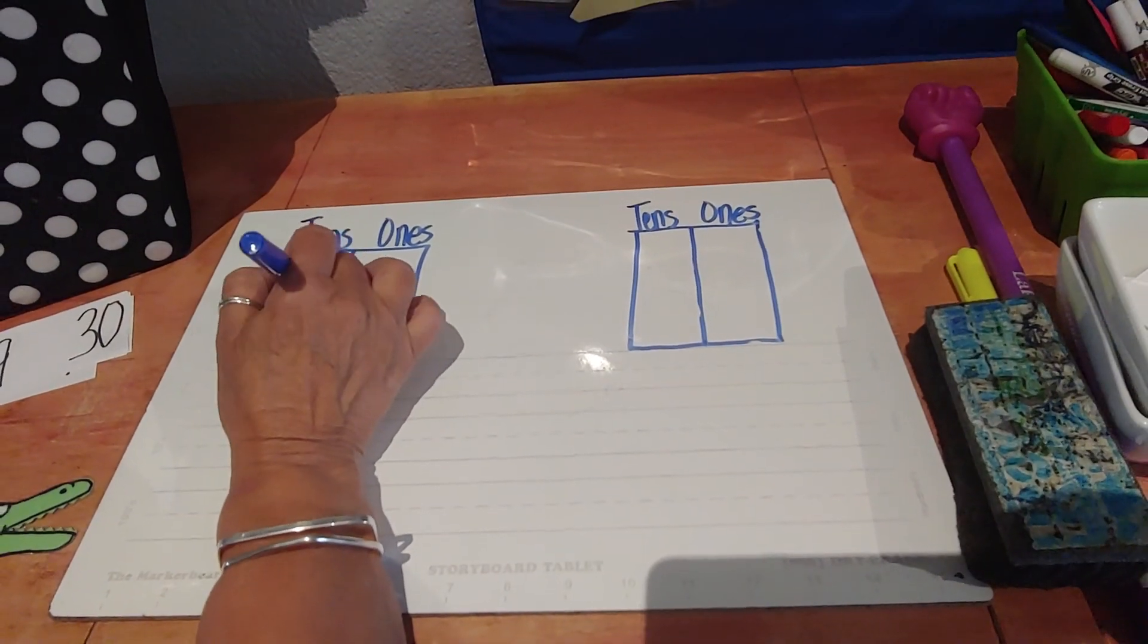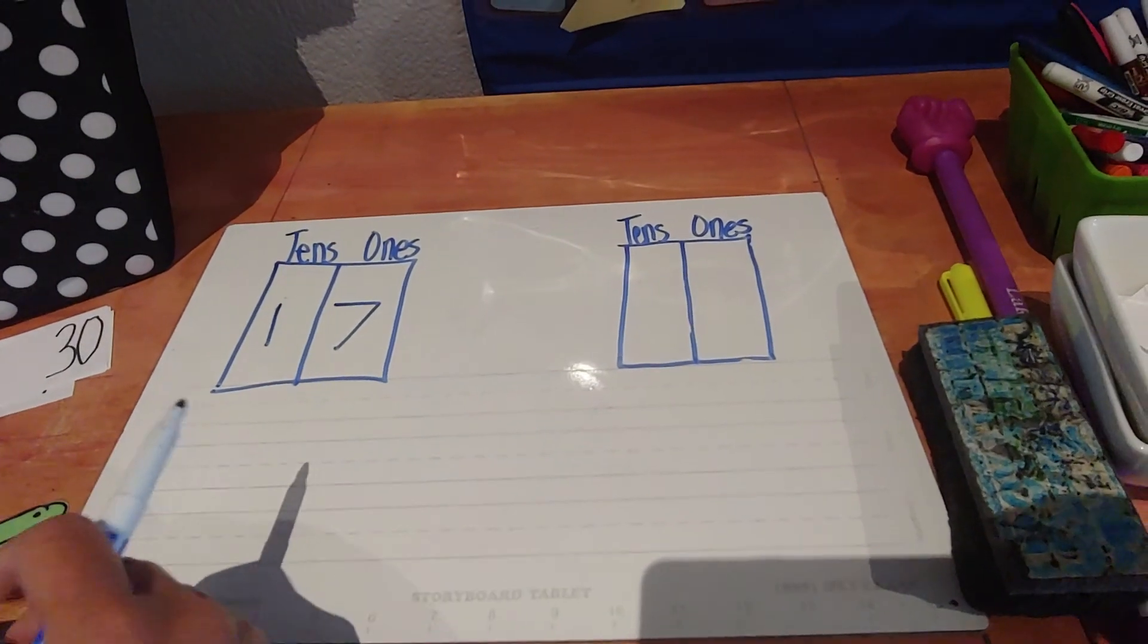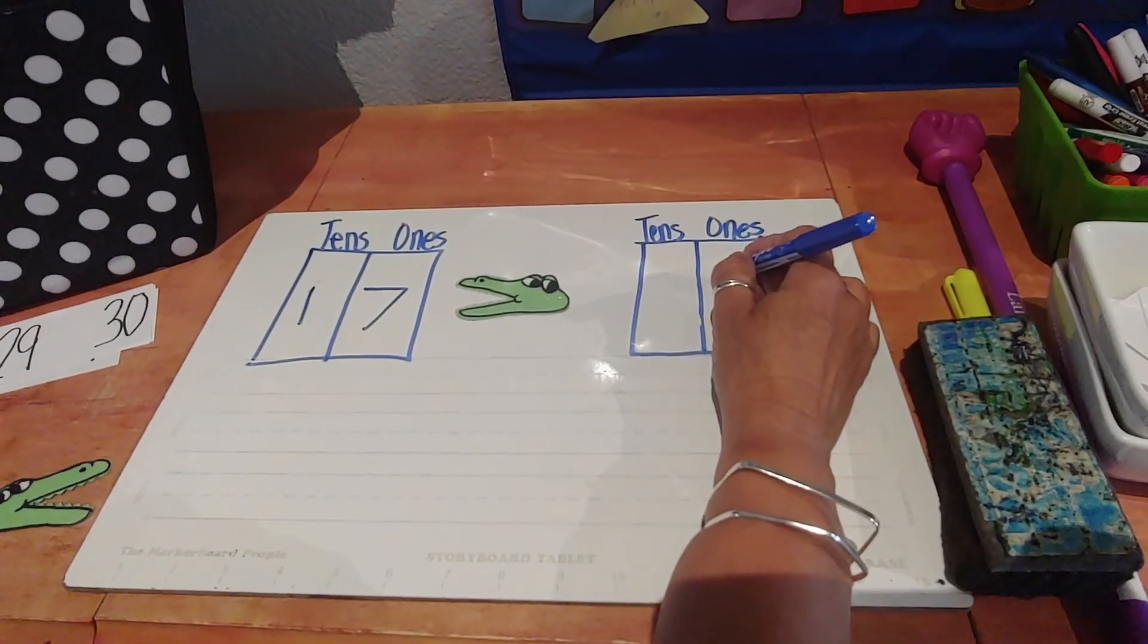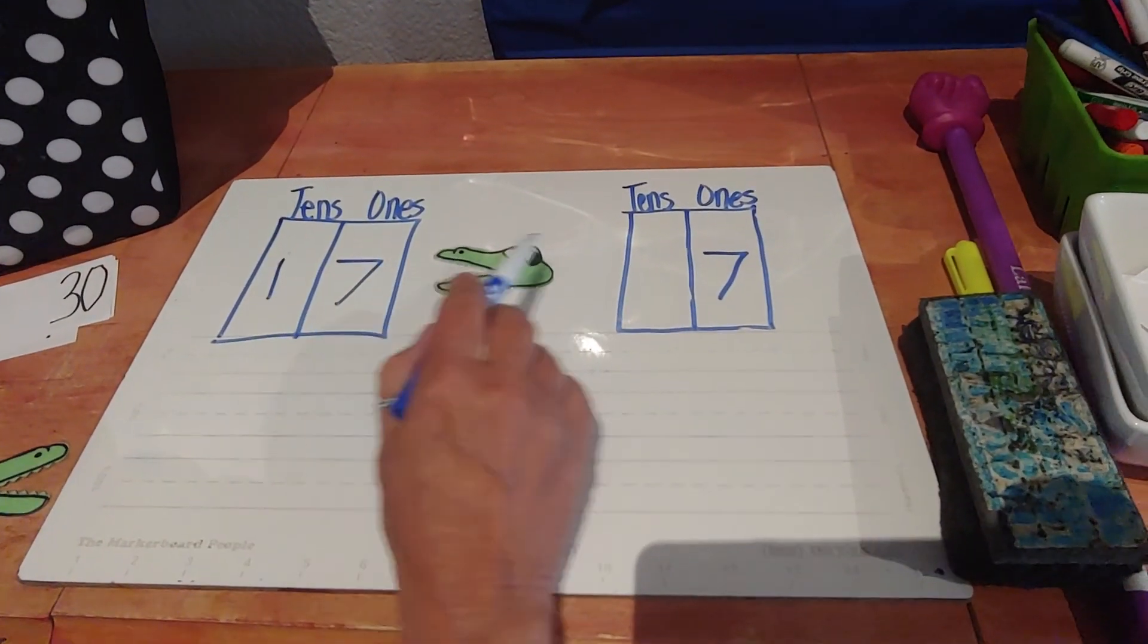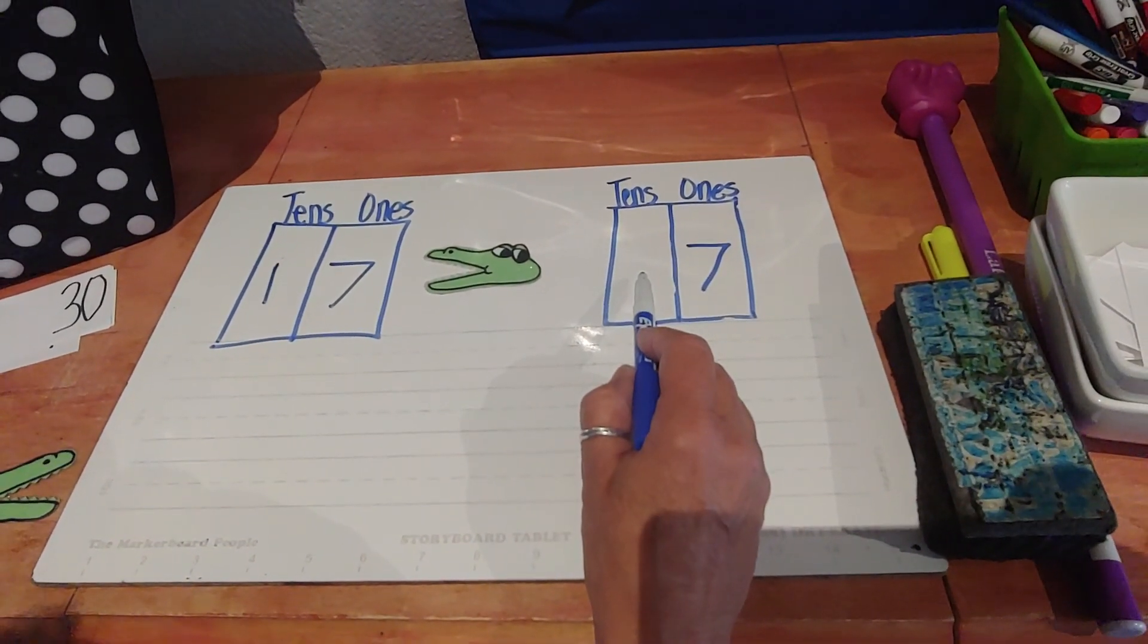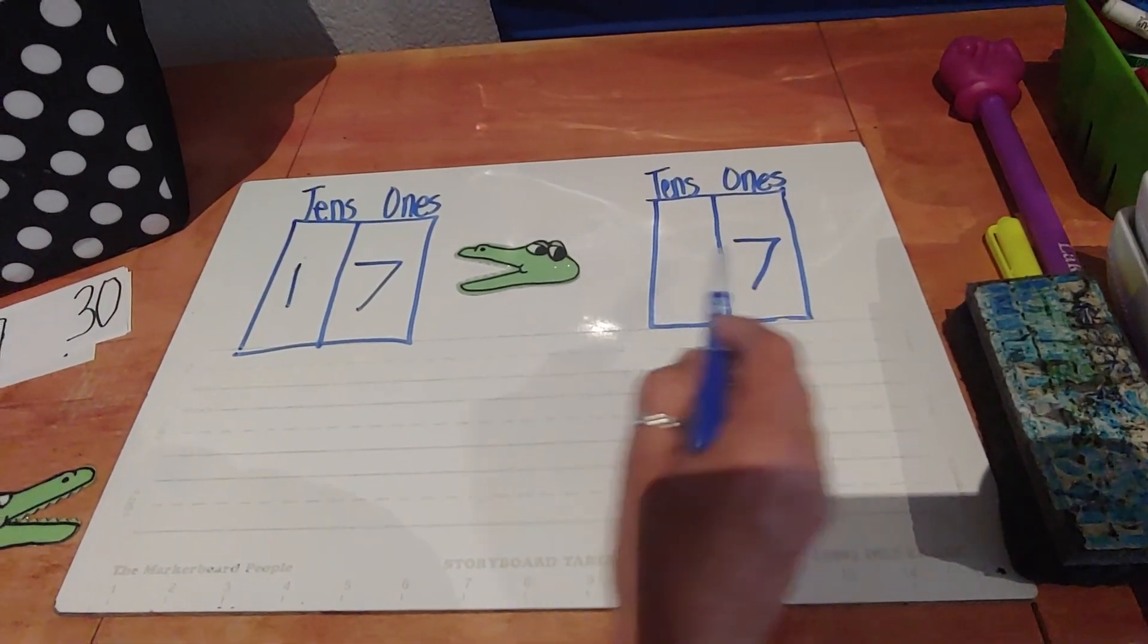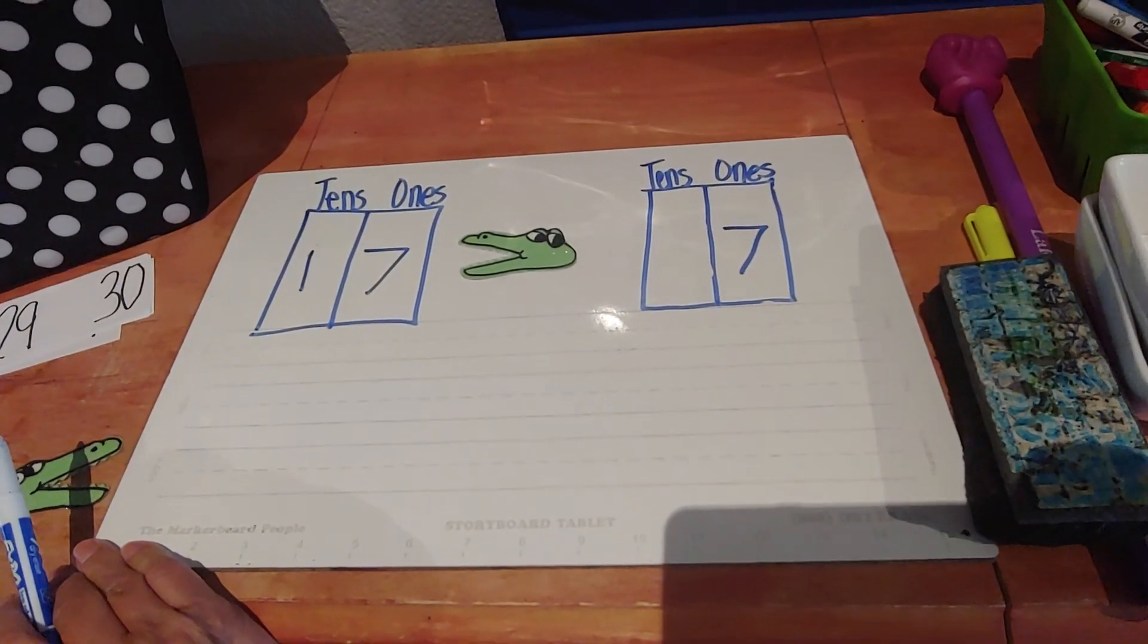And this one says that there's one in the tens and seven in the ones. And this is the 17 is going to be greater than there's no tens, but they give you a seven. This 17 is greater than this. If we use a one here, it's going to be equal. If we use a two here, that's going to say 27 and 27 is greater than 17. So there's only one number that's going to work there. What do you think it is?